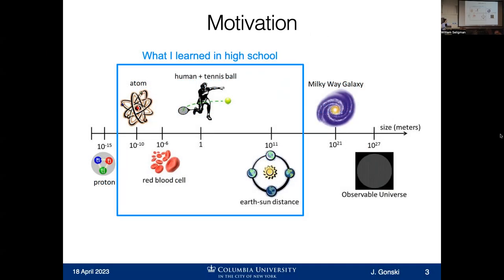Starting from a high school physics curriculum, the length scales covered in a typical introductory physics class include a little bit of electromagnetism, up to the length scale of planets orbiting the sun in the solar system. Within this box, you're covering already about 10 decades in terms of meters of length scale — a pretty solid coverage to start understanding the dynamics of systems.